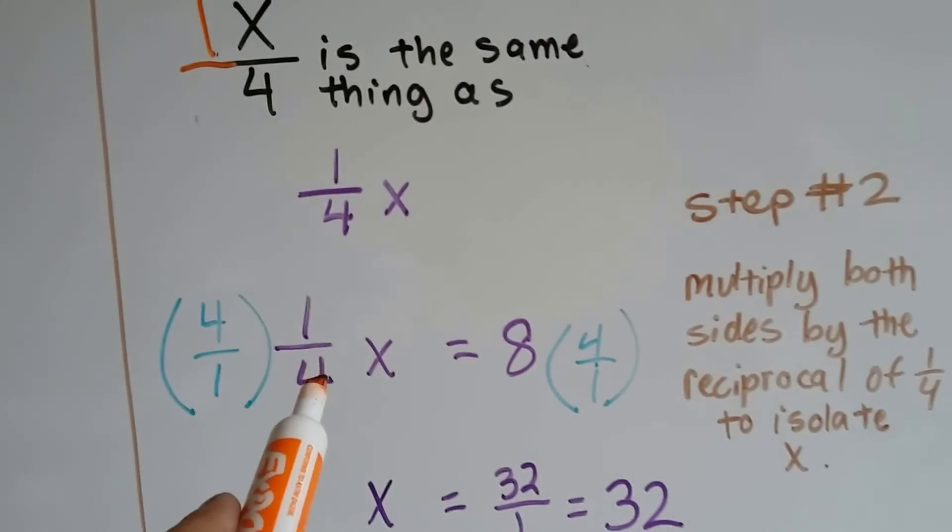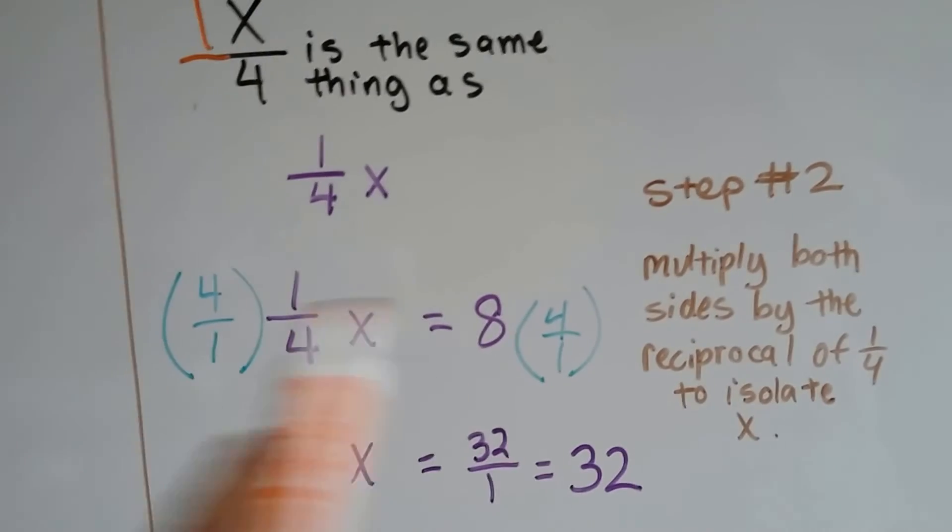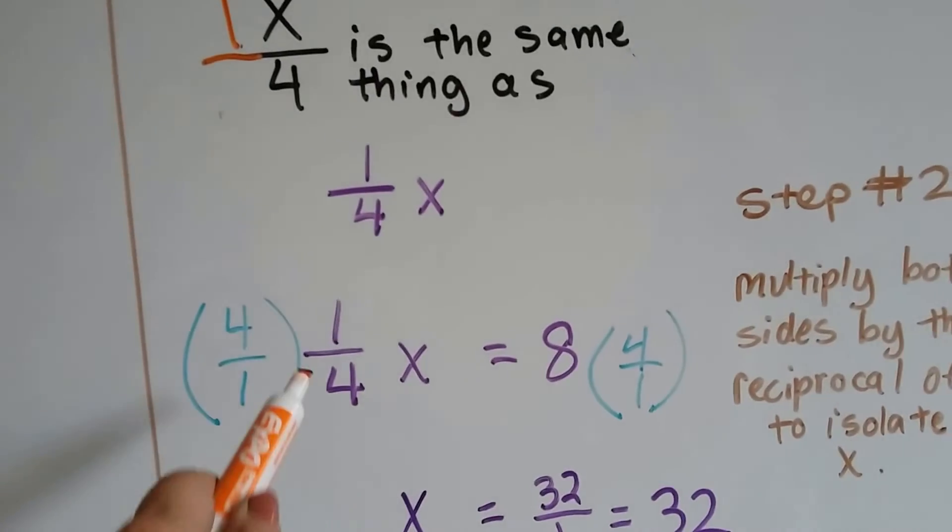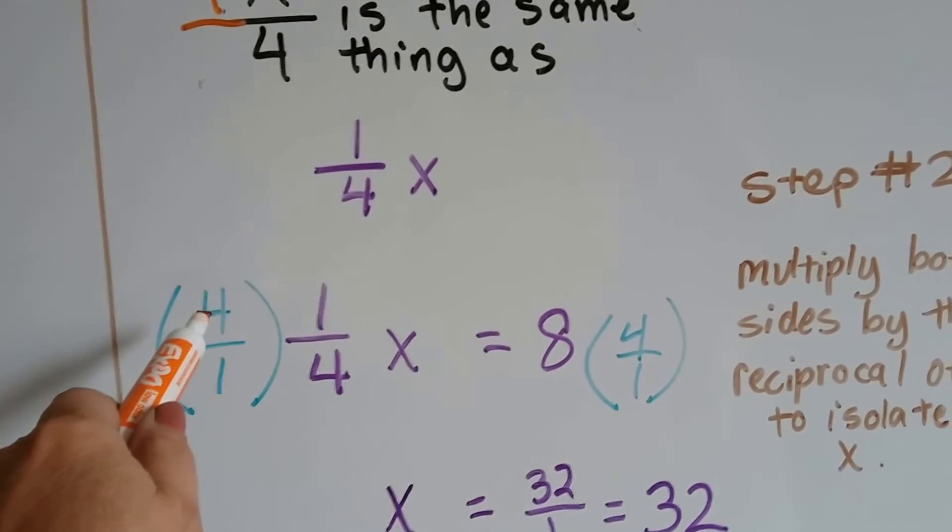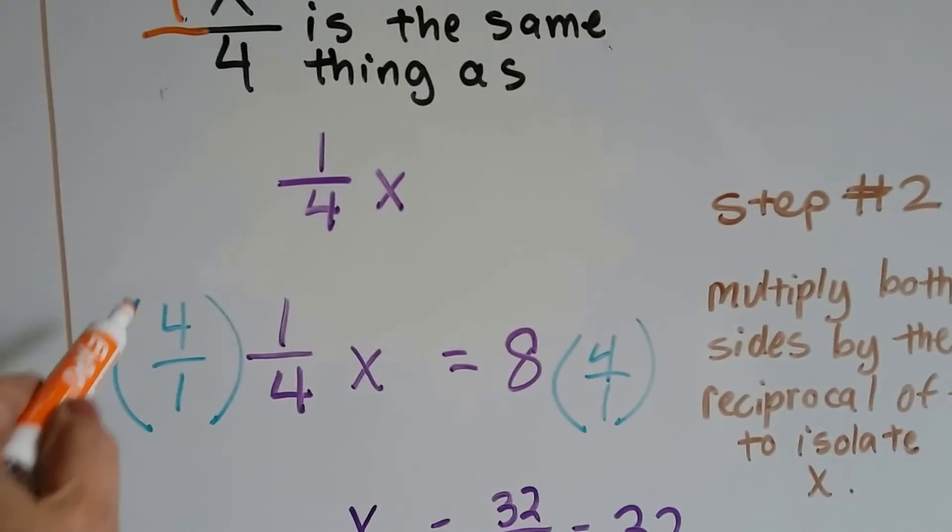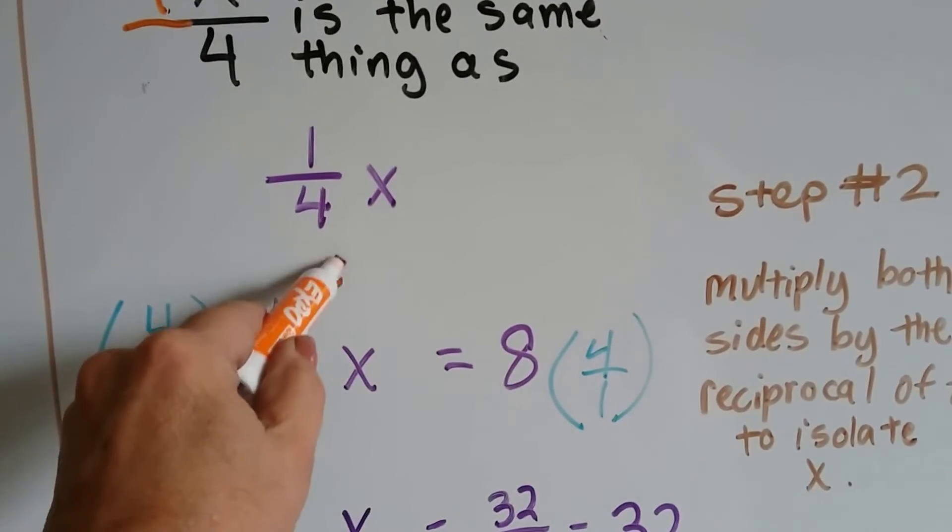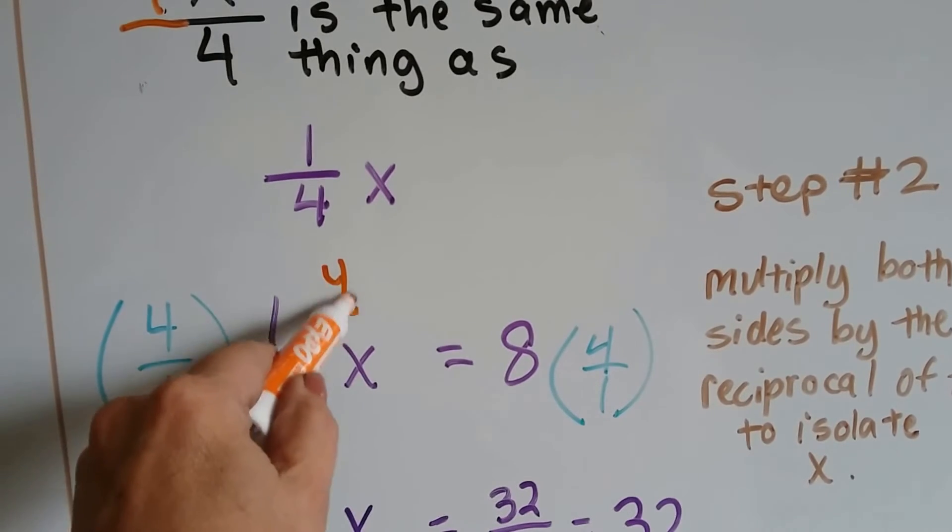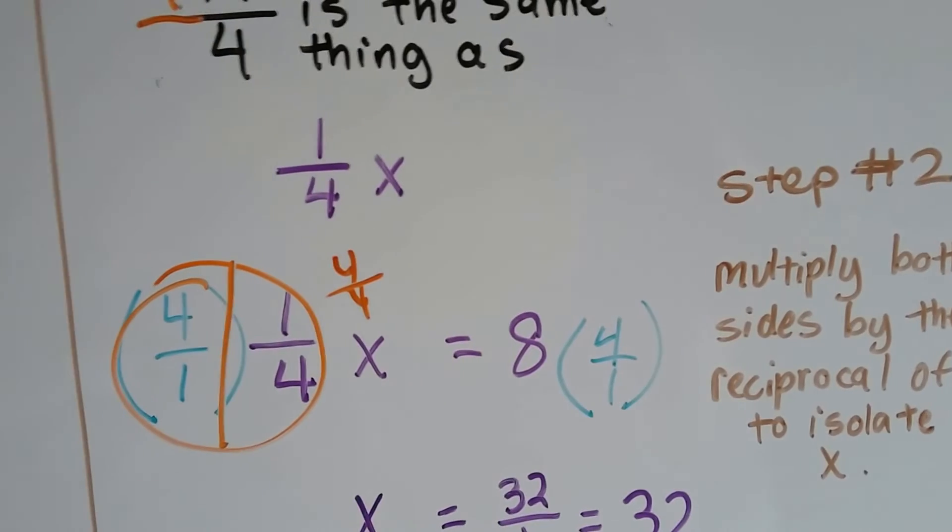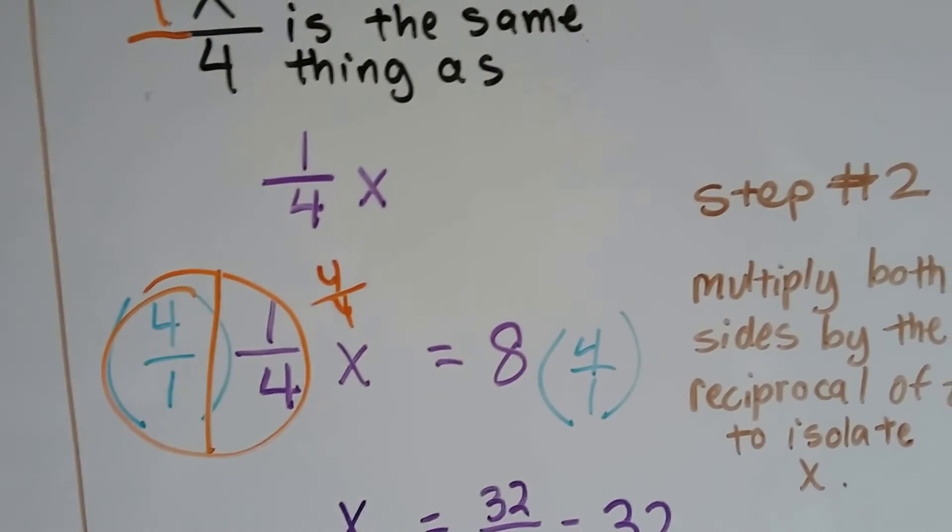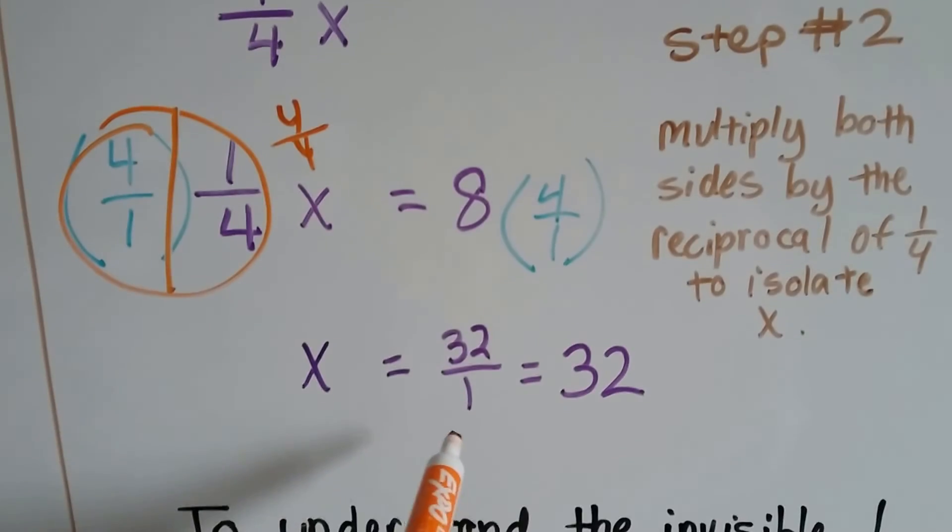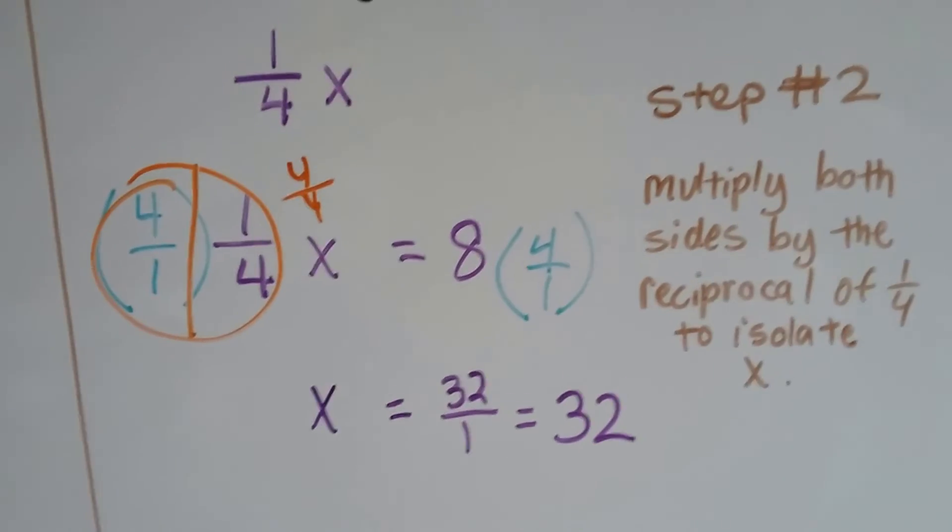So we rewrite it as 1 fourth x. And now, what we can do for our step 2 is multiply both sides by the reciprocal to isolate the x. So the reciprocal of 1 fourth is 4 over 1. And we multiply the 8 by 4 over 1 also. Well, 4 times 1 is 4 and 1 times 4 is 4. So this creates a 1 because the numerator and denominator are the same. 8 times 4 is 32 over 1. And 32 over 1 is 32.